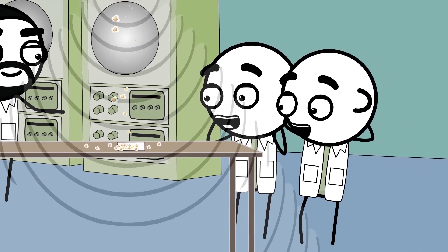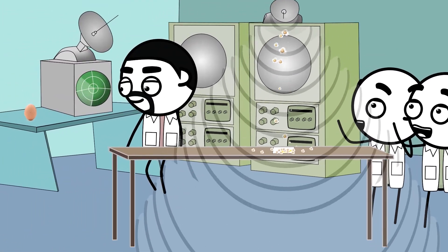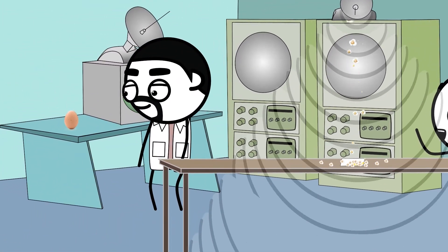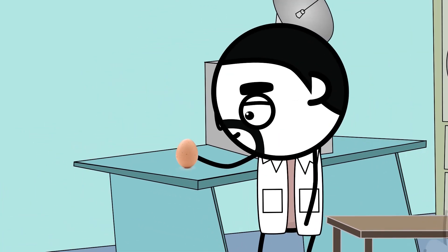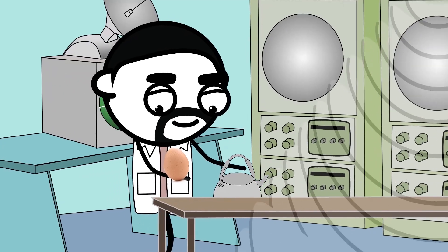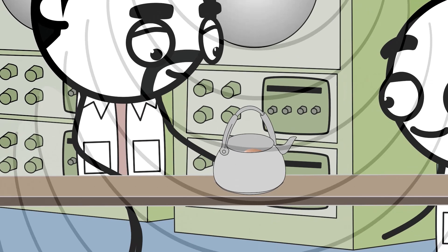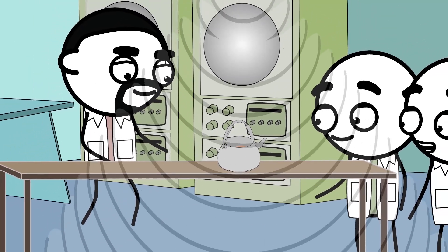His colleagues gathered around, stunned. But Percy wasn't done. He wanted to test something with a bit more drama. He grabbed an egg. Now, Percy knew that cooking an egg this way would build up immense pressure inside the shell. He placed it inside a kettle to contain the inevitable outcome.